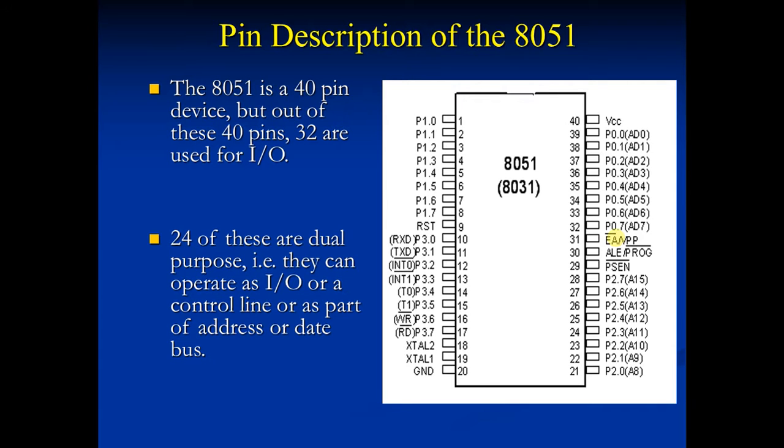Now move on to PSEN, pin 29. It is an active low signal. It is used to enable external program memory, means ROM. When PSEN is equal to 0, then ROM becomes enabled and microcontroller reads content of ROM. Therefore, it is connected to OE of external ROM. It is activated twice every external ROM memory cycle.